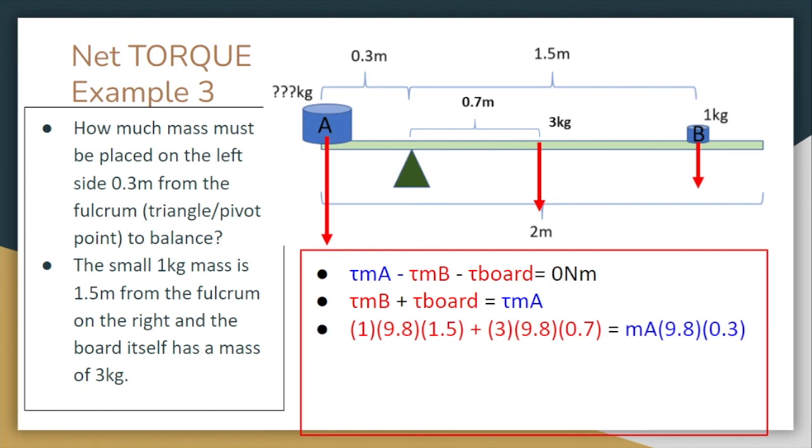You'll notice that we have 9.8 in all of these, because it's just the force gravities of these objects that are helping to create the torques. So I'm just going to cancel out 9.8 from everything just to kind of make it easier on myself. And then we're going to go ahead and simplify. We get 1.5 plus 2.1 is equal to mass of block A times its radius. And then we just solve and find out that the mass of block A should be about 12 kilograms.